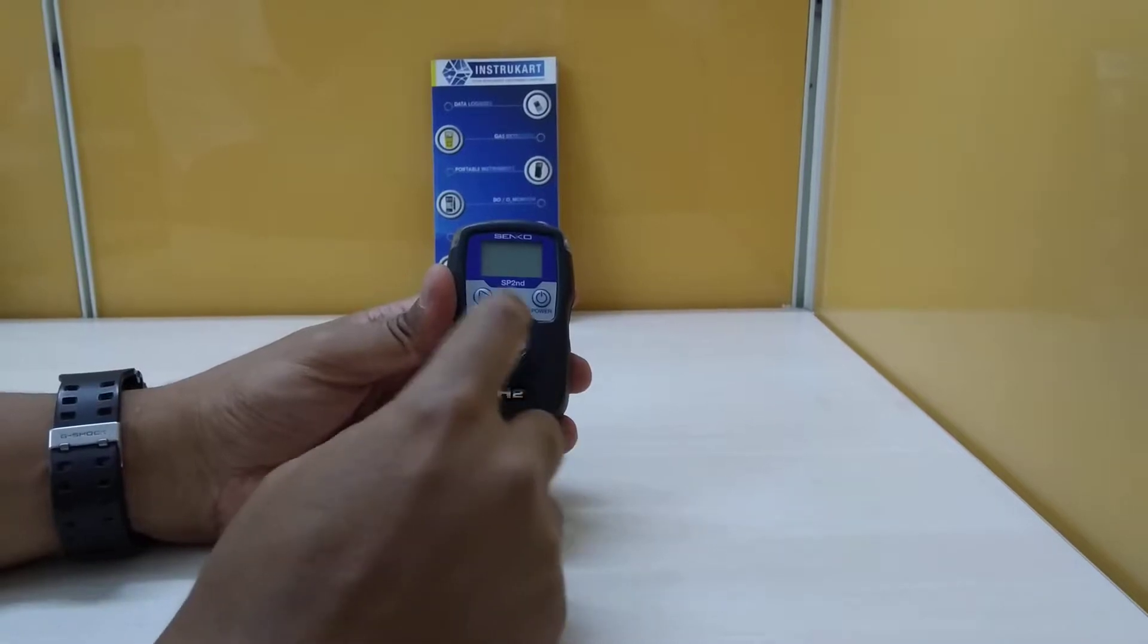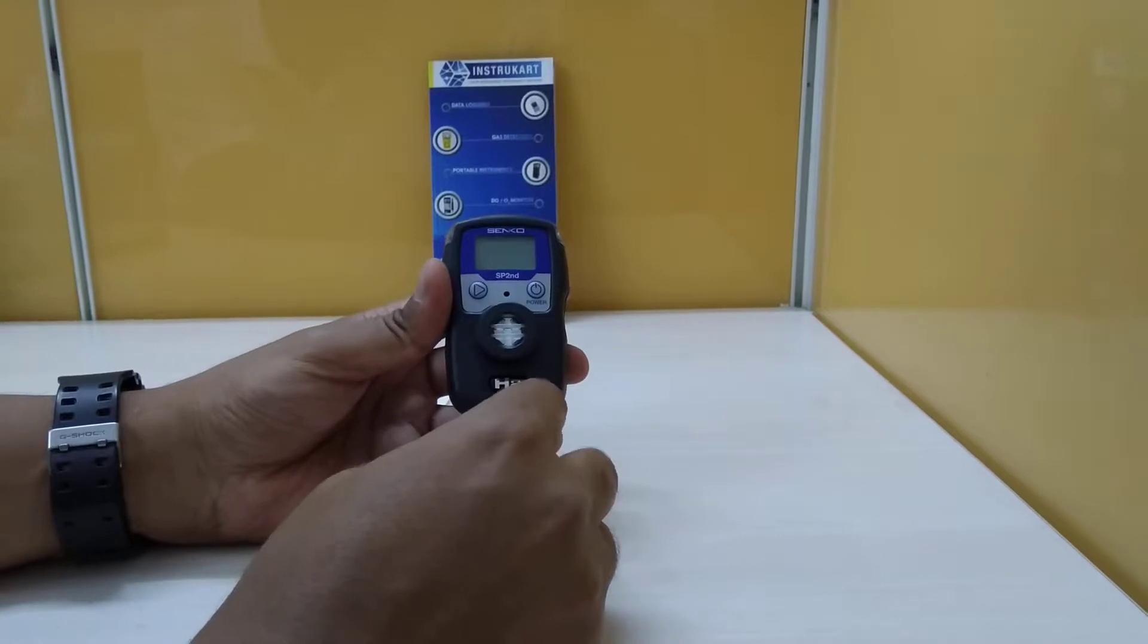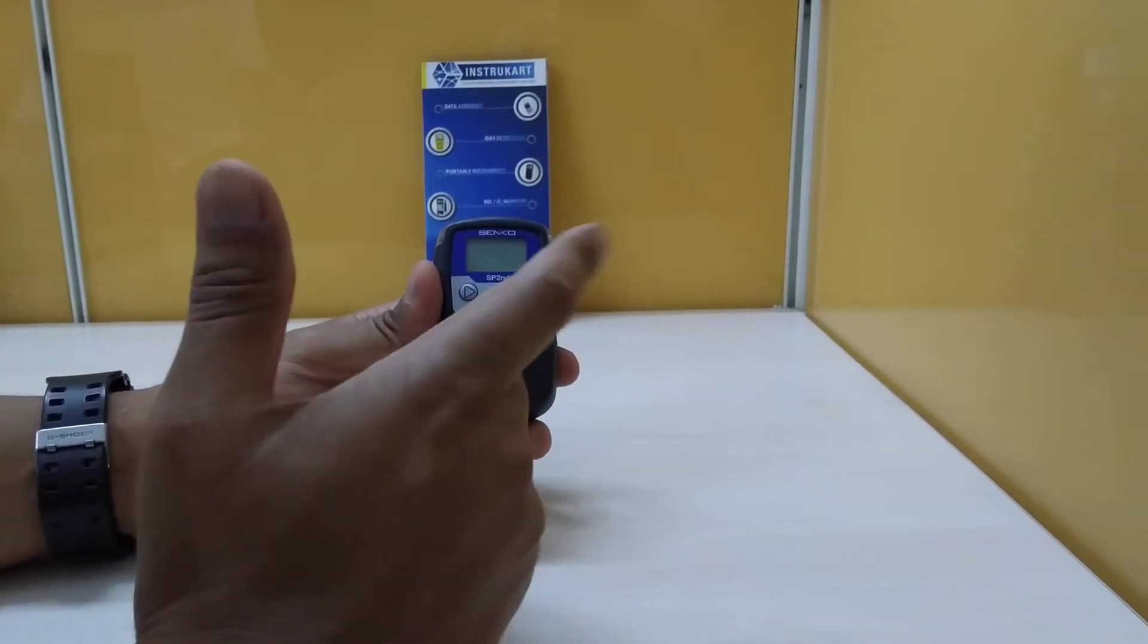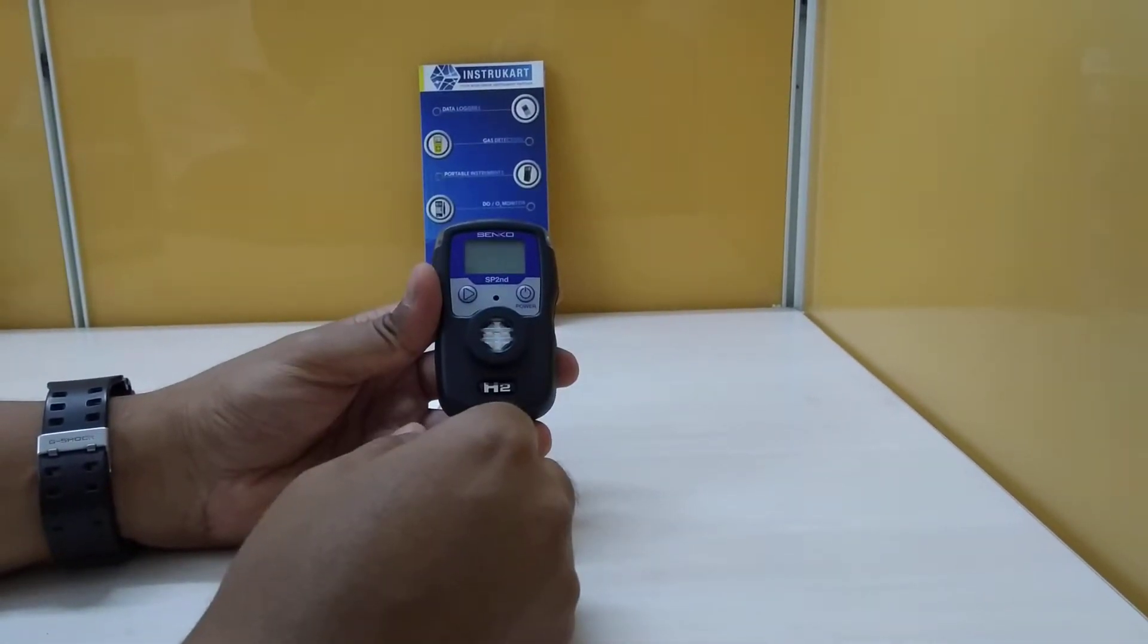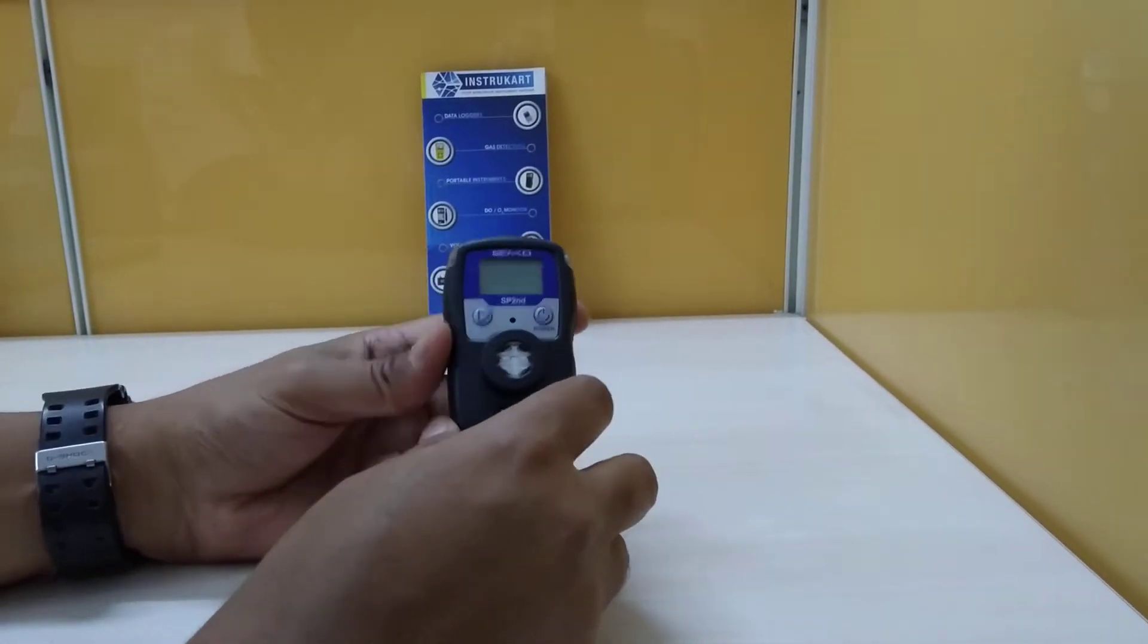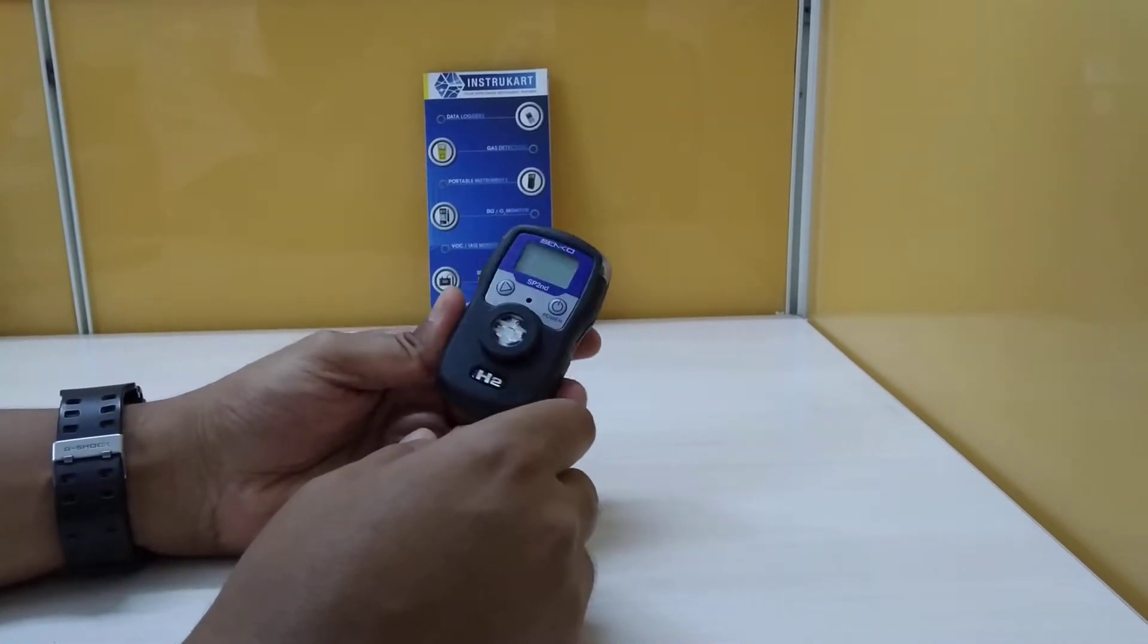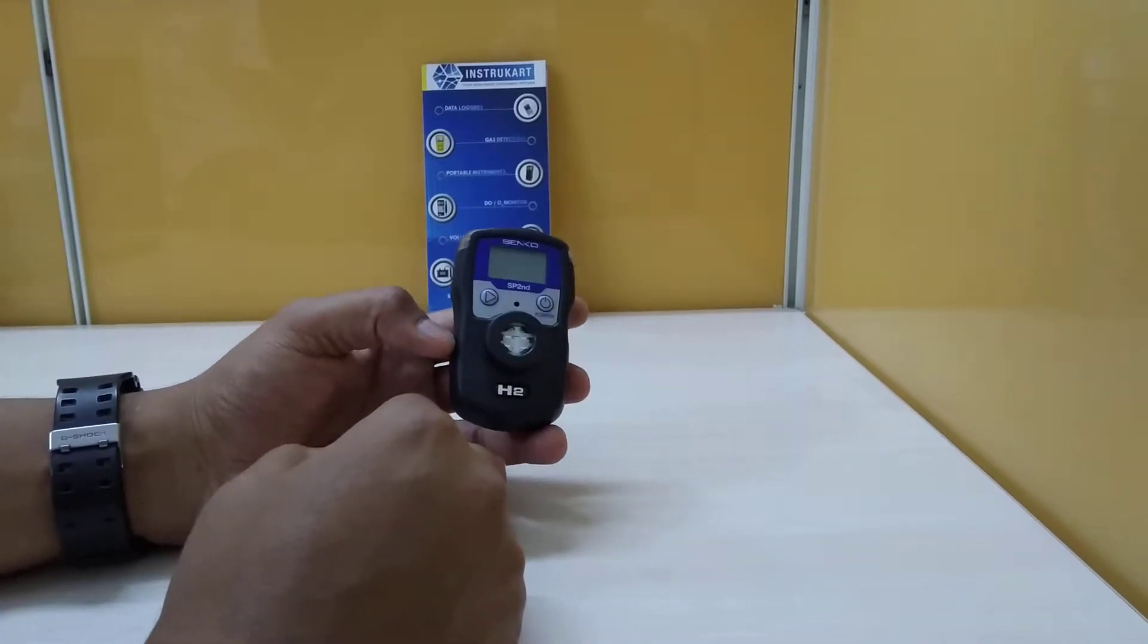This detector model is SP2ND. There's an SP2ND series which offers multiple gas options like hydrogen, oxygen, CO, and H2S. This particular instrument is an industrial standard instrument for hydrogen detection.